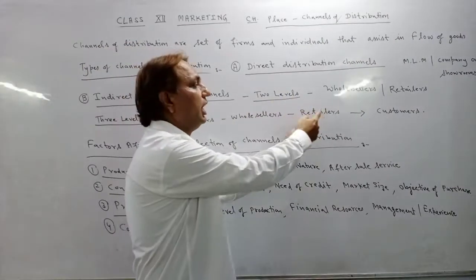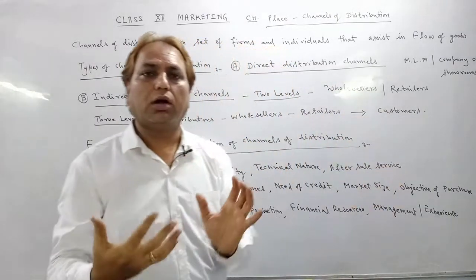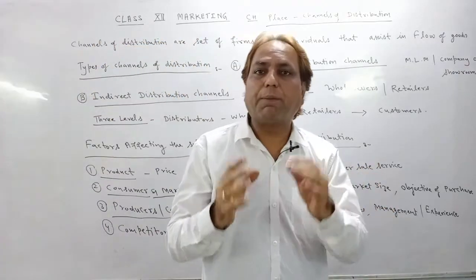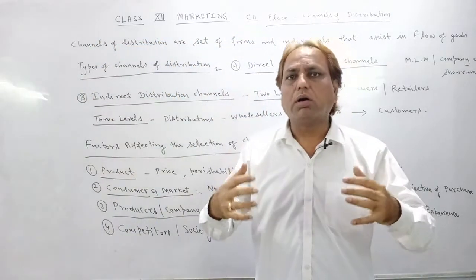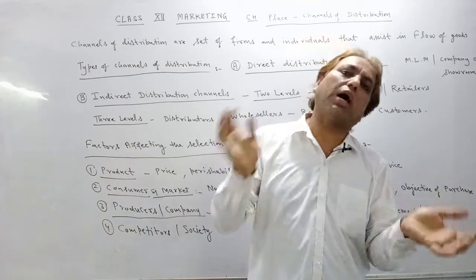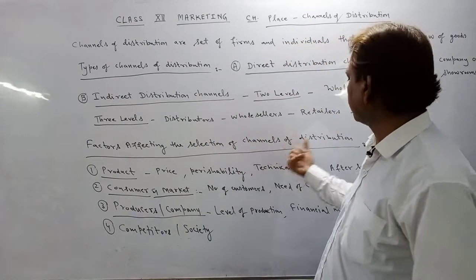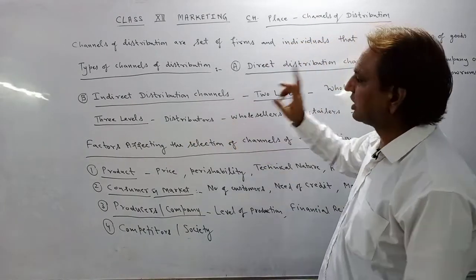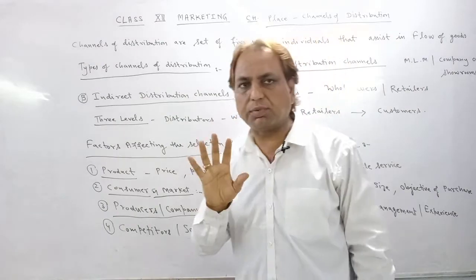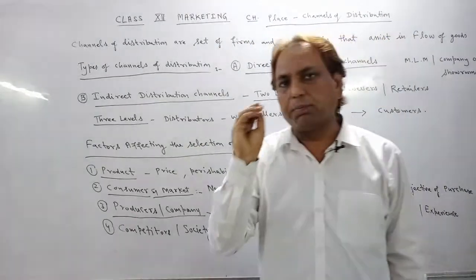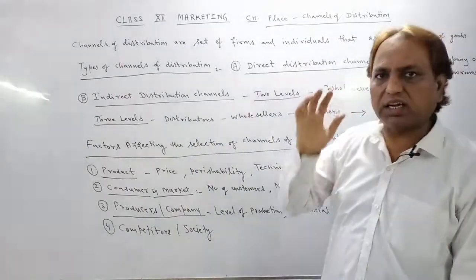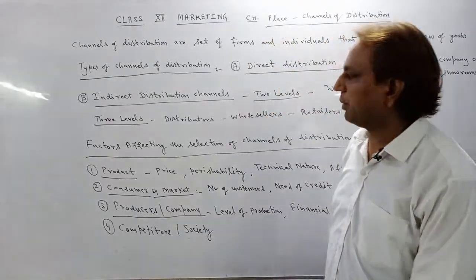The three-level channel of distribution adds another layer — agents, wholesalers, and retailers. When your business has grown, your market size has increased, and your business operates at state, national, or international level, then you need three-level channel management. In indirect channels, intermediaries are called channels of distribution, while in direct channels, the company itself sells directly.